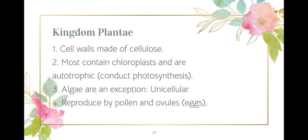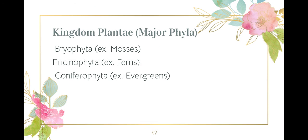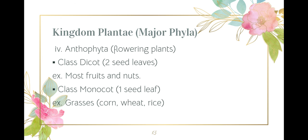Plants will reproduce sexually by pollen and ovule. Here are some major phylums of the plant kingdom. We have mosses (Bryophyta), ferns (Philicinophyta), and evergreens (Coniferophyta). We will also have Anthophyta, which are flowering plants. Going even further down, we look at different classes: we have dicot, a Greek prefix meaning two — so a two-seed leaf, which is most of our nuts and fruits. And then we also have monocot — mono meaning one — so a one-seed leaf, which is most of our grasses and grains, like rice and corn.